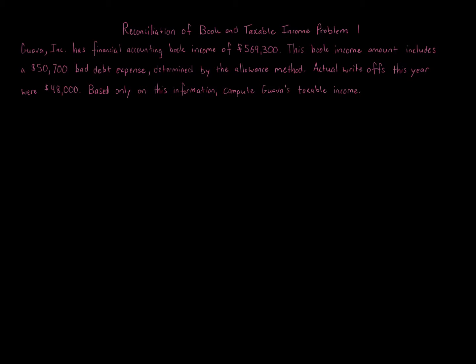This question is asking us to compute taxable income and we're given the accounting book income number. Anytime a question gives you the accounting book income, gives you some specific items and information, and wants you to compute taxable income, this is a reconciliation of book and taxable income problem.